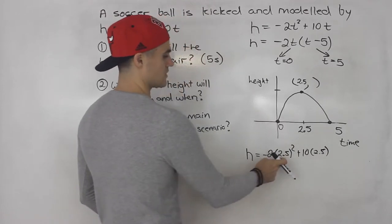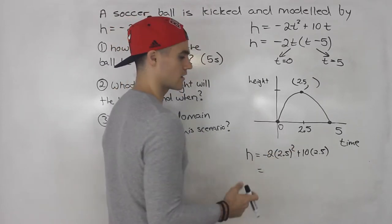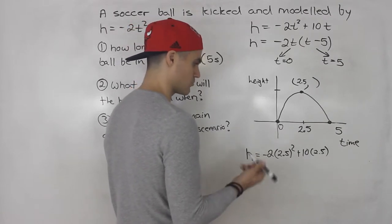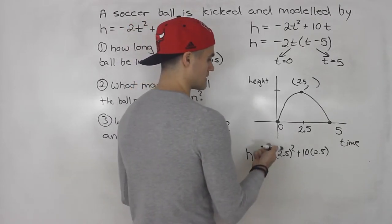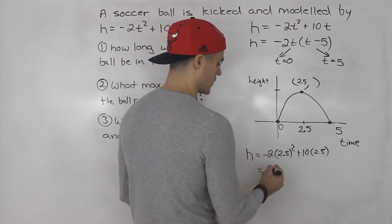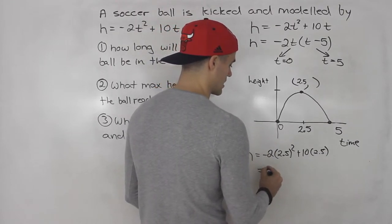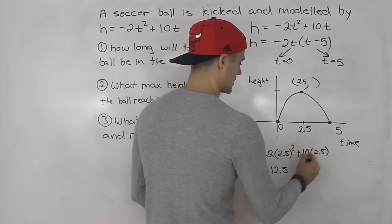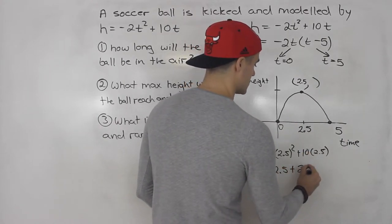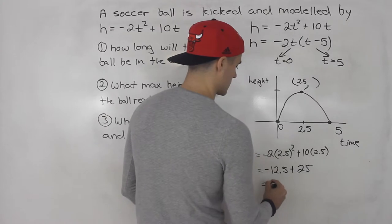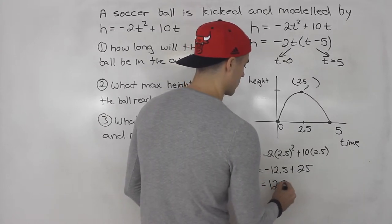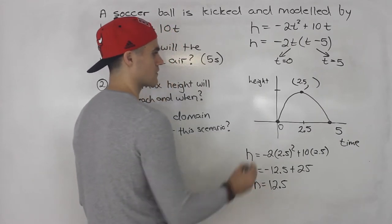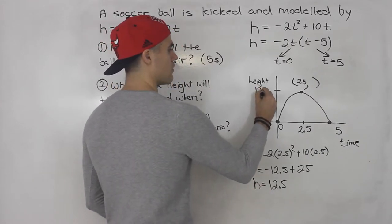So we'd have negative 2 times 2.5 squared plus 10 times 2.5. So this would give us 2.5 squared is 2.5 times 2.5, which is 6.25. Then 6.25 times negative 2 gives us negative 12.5. Then 10 times 2.5 gives us 25. And from here, we would just get 12.5. Negative 12.5 plus 25 gives us positive 12.5.